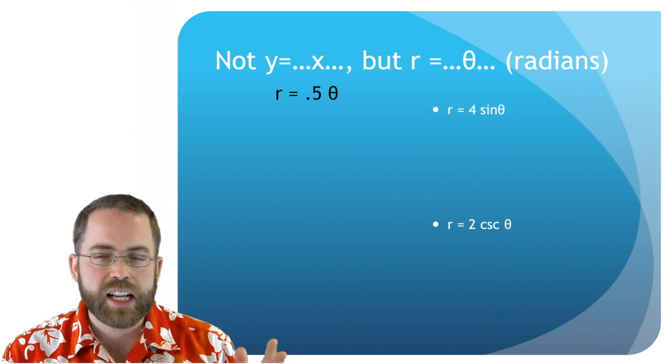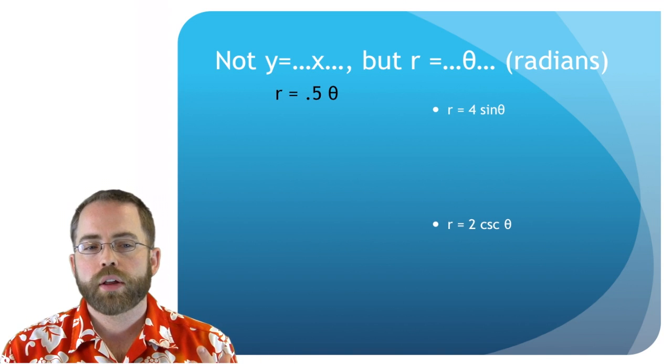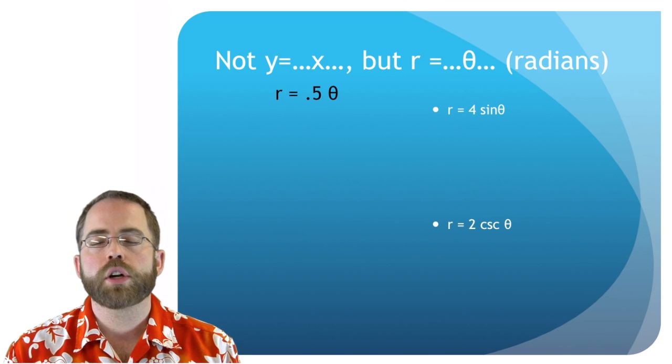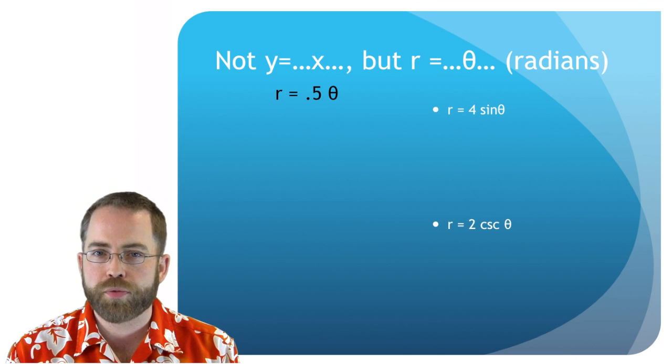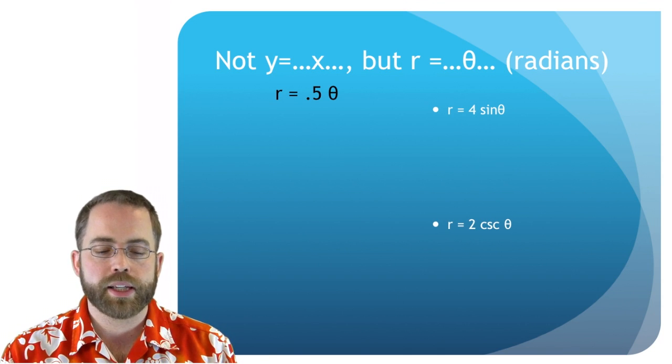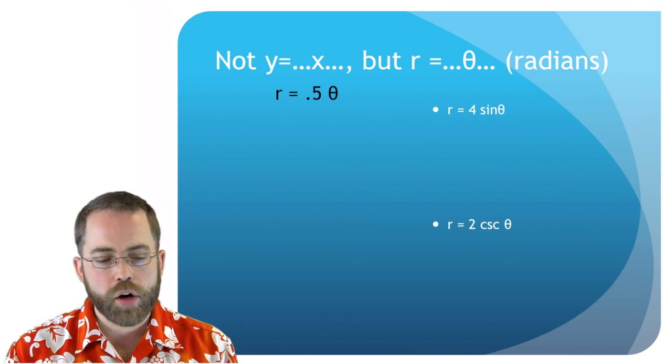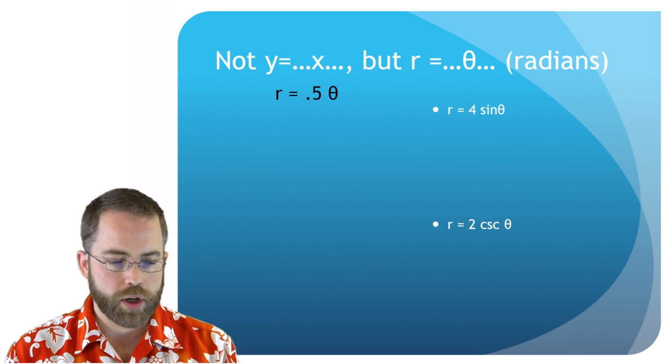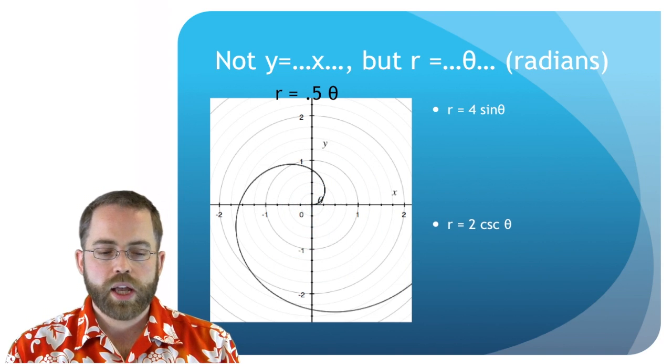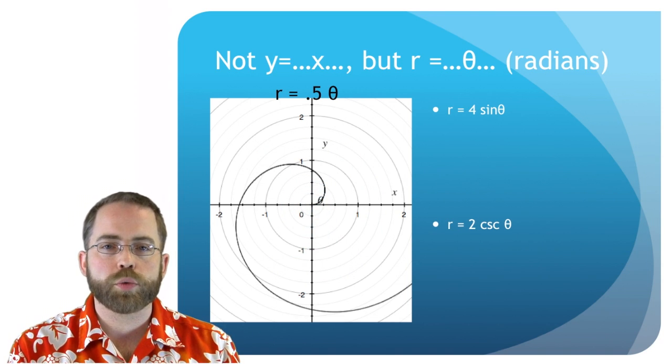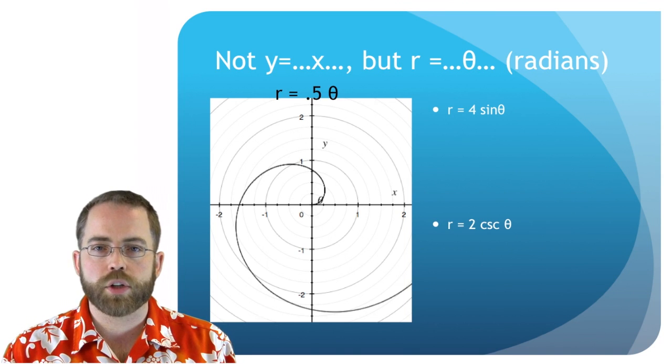So it's not different. It's identical to how we would graph points in rectangular. In rectangular, you would pick some x's, plug them into your equation. That would help you figure out some y's. You'd get some dots. You'd play connect the dots. So if we want to graph r equals 0.5 theta, well, you can see that if we pick 0, we get 0. And as we turn around and around, we're getting bigger and bigger r's because theta is going up.